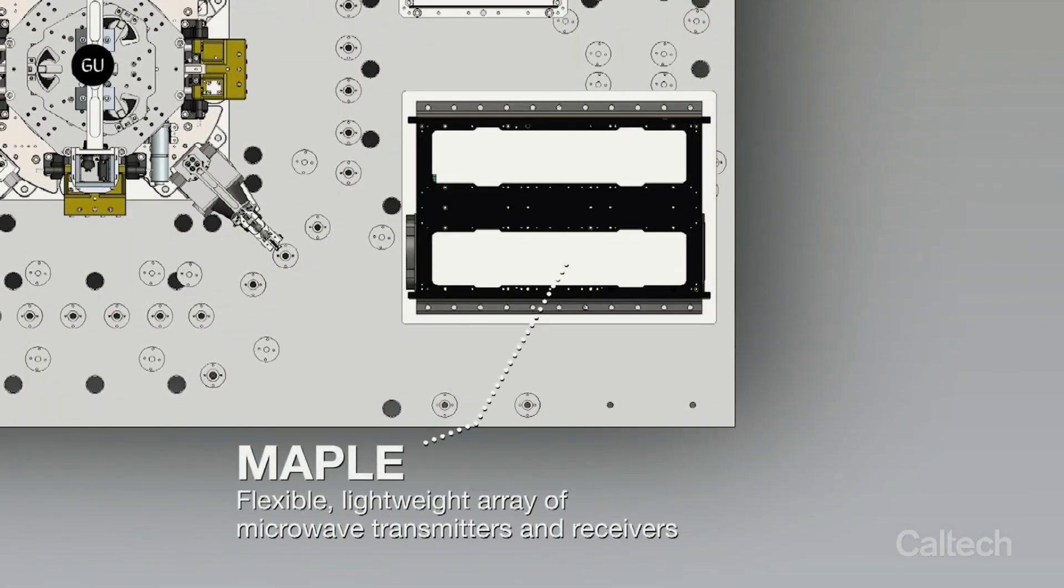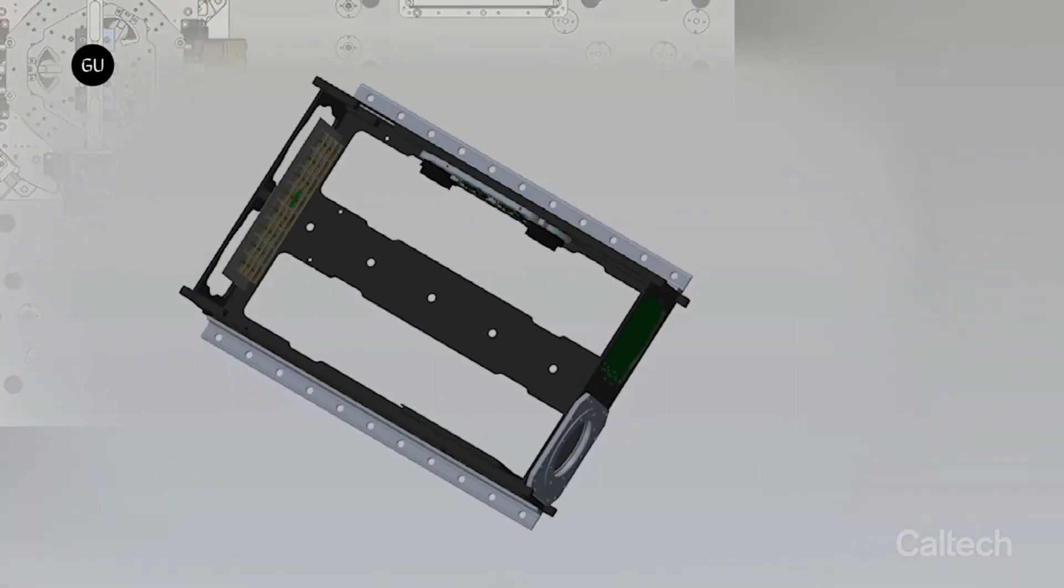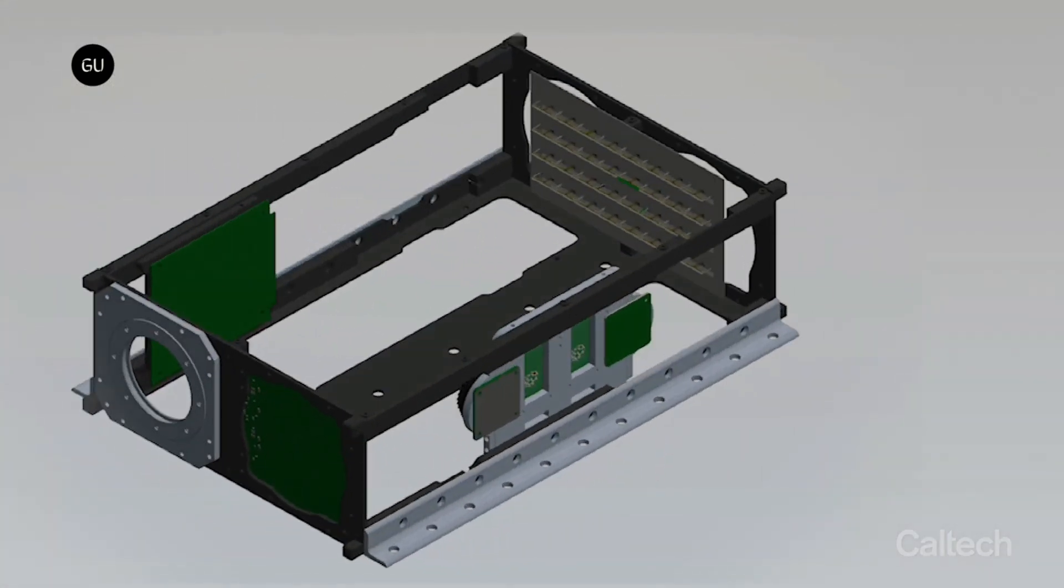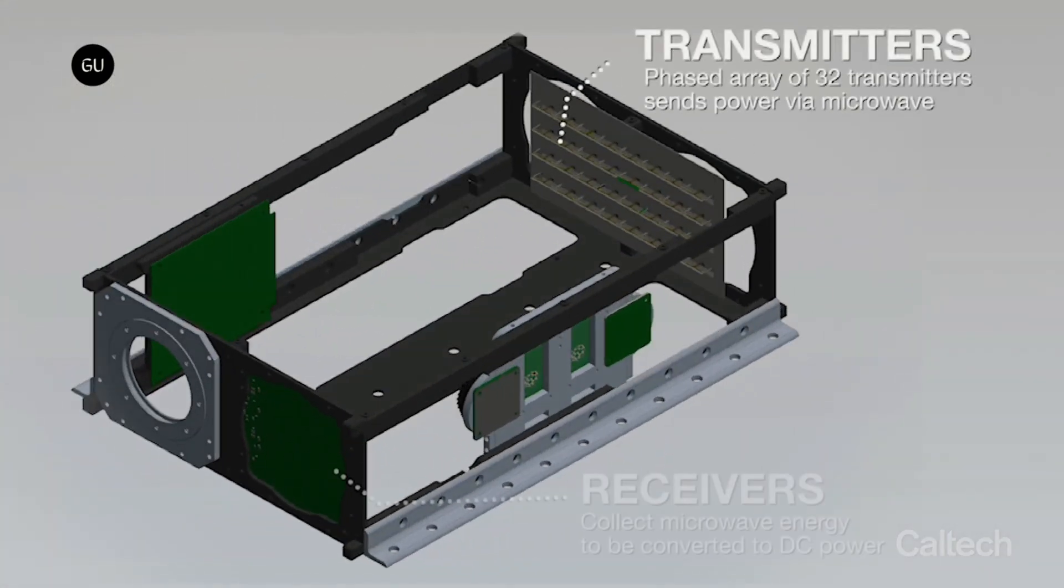MAPLE, short for Microwave Array for Power Transfer Low-Orbit Experiment, consists of an array of flexible, lightweight microwave power transmitters built using custom electronic chips to beam the energy to desired locations.